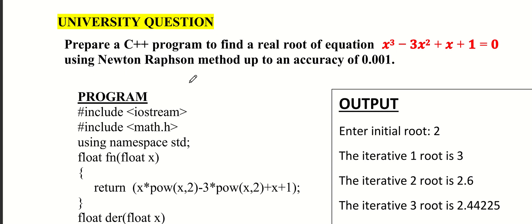Hello dear students. This is an investigative question. Let's prepare a C++ program to find a real root of the equation x cube minus 3x square plus x plus 1 is equal to 0, using the Newton-Raphson method up to an accuracy of 0.001.